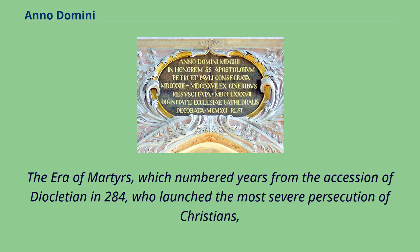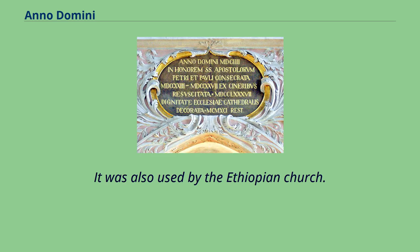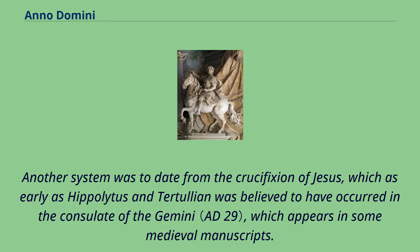The era of martyrs, which numbered years from the accession of Diocletian in 284, who launched the most severe persecution of Christians, was used by the Church of Alexandria and is still used officially by the Coptic Orthodox and Coptic Catholic churches. It was also used by the Ethiopian Church. Another system was to date from the crucifixion of Jesus, which as early as Hippolytus and Tertullian was believed to have occurred in the Consulate of the Gemini, which appears in some medieval manuscripts.